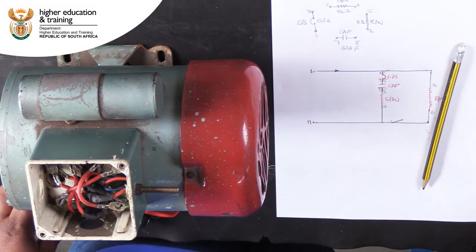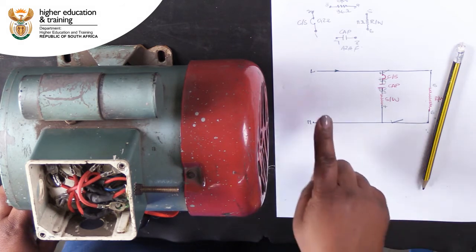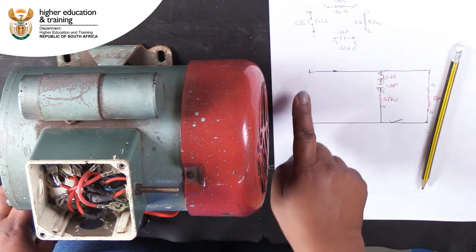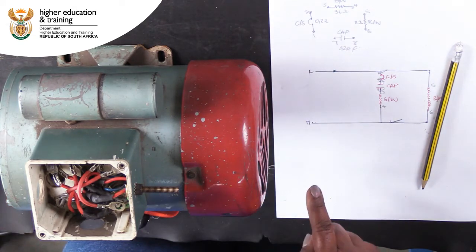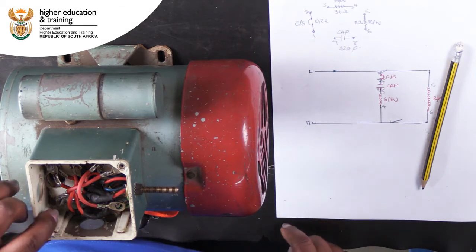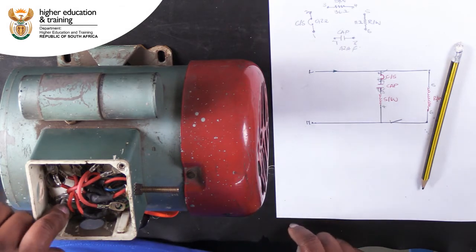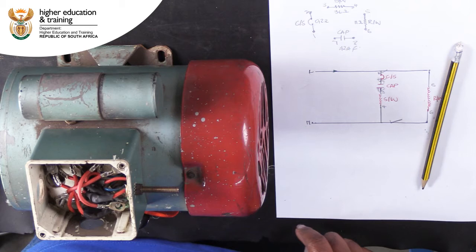We can now connect our motor to the supply. We will connect live to point 1 and neutral to point 6. Note that because points 1 and 5 are bridged, we could also connect live to point 5. The same is true for neutral, which we could also connect to point 4.